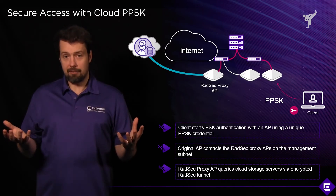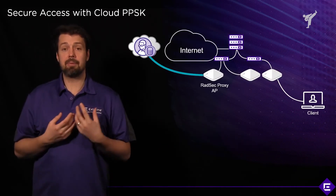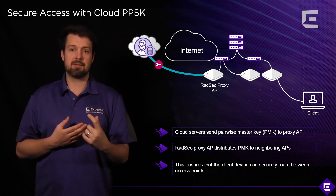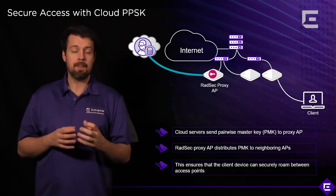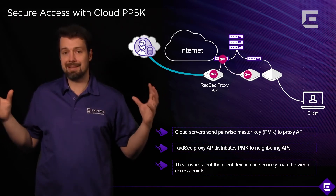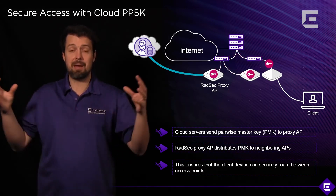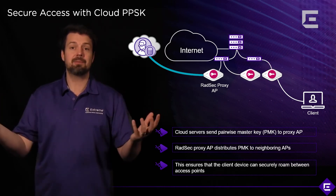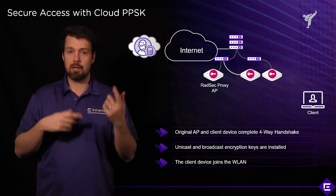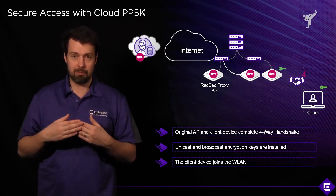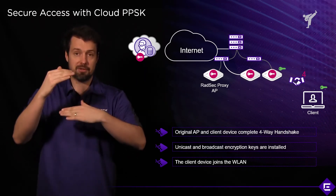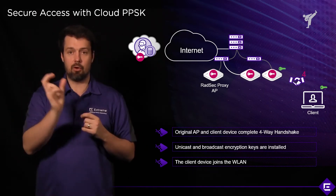The RATSEC proxy then authenticates the user against Extreme Cloud IQ. If authentication is successful, a PMK is generated and pushed down through the secure RATSEC tunnel to the RATSEC proxy AP. Cooperative control protocols then redistribute that PMK to all access points within the same Layer 2 domain or using the same Hive key. This enables seamless roaming — when a client moves from one AP to another, it only needs to reinitiate the four-way handshake to get a new encryption key, with no need to wait for PMK generation. Cloud communication only happens on first connection, not on subsequent roaming events.